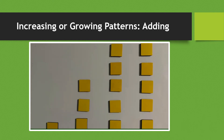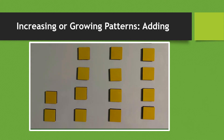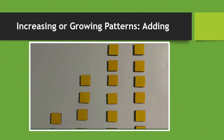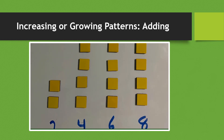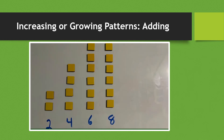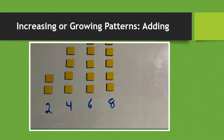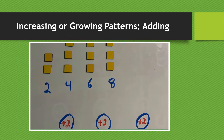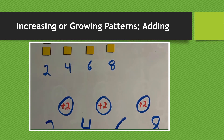Let's take a look at a second pattern — this one is larger. We're starting with two blocks, then four, then six, then eight. So this will be a gap of plus two each time a new column is added. Both of these are examples of increasing or growing patterns.